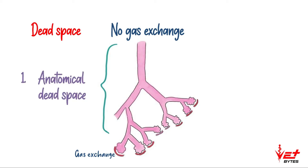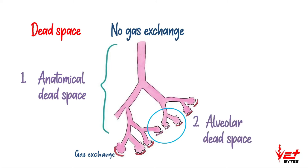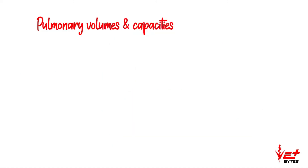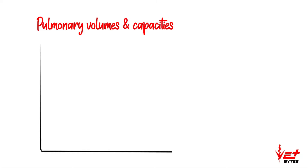In some alveoli, due to poor perfusion, gaseous exchange may get affected, so this area is referred to as alveolar dead space. Physiological dead space is the sum of both anatomical dead space and alveolar dead space. Now let's move on to pulmonary volumes and capacities.